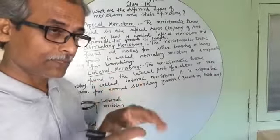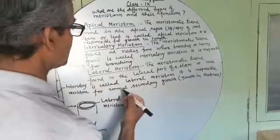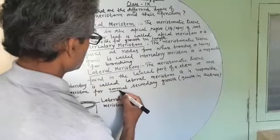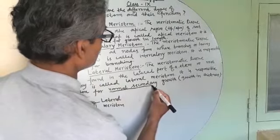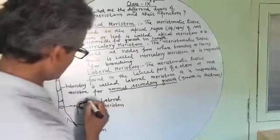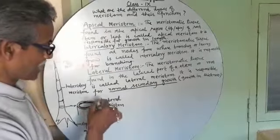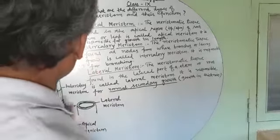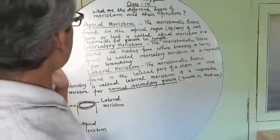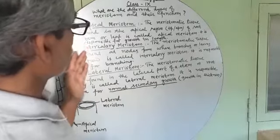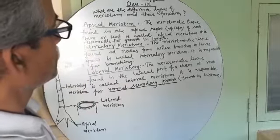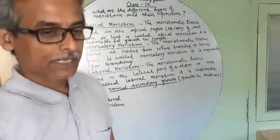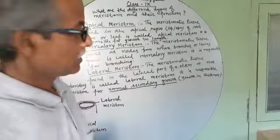You will generally find this term normal secondary growth. Normal secondary growth means growth in width, growth in diameter, growth in thickness. So these are the different types of meristematic tissue.